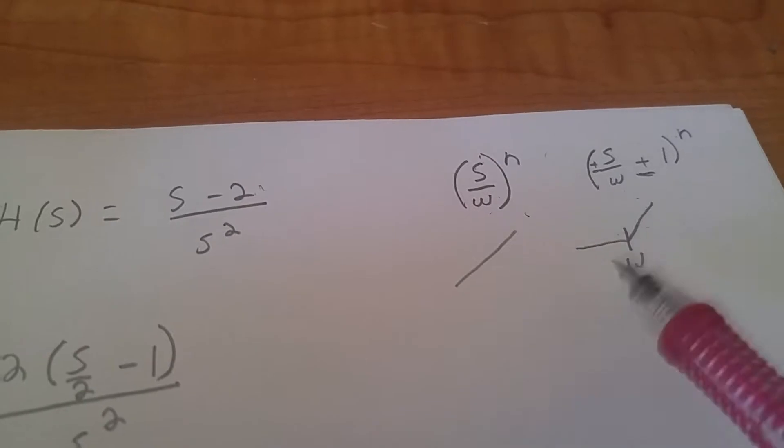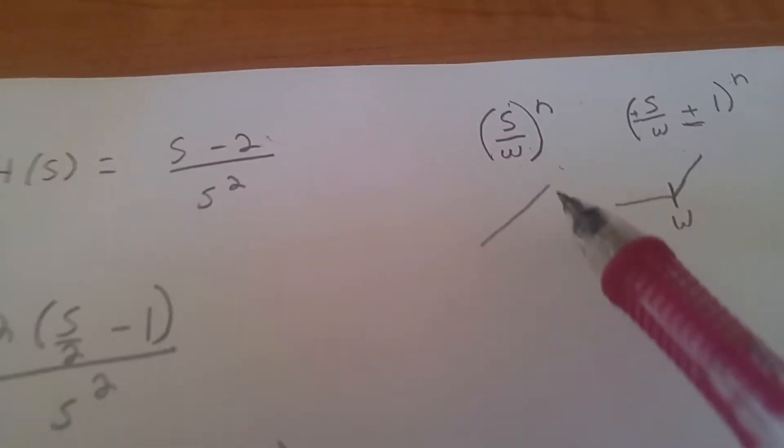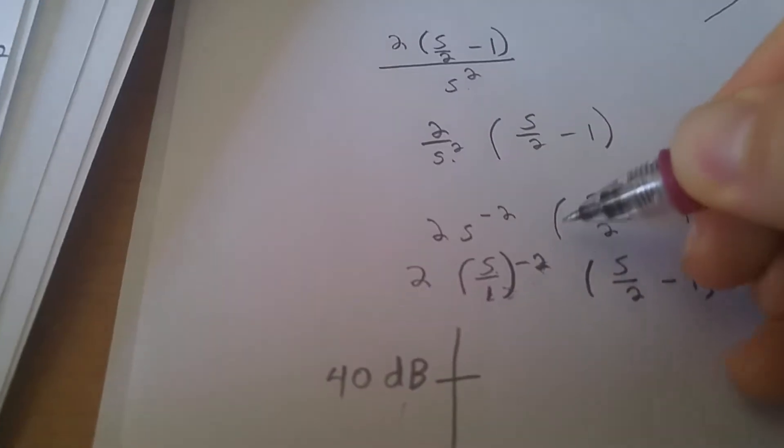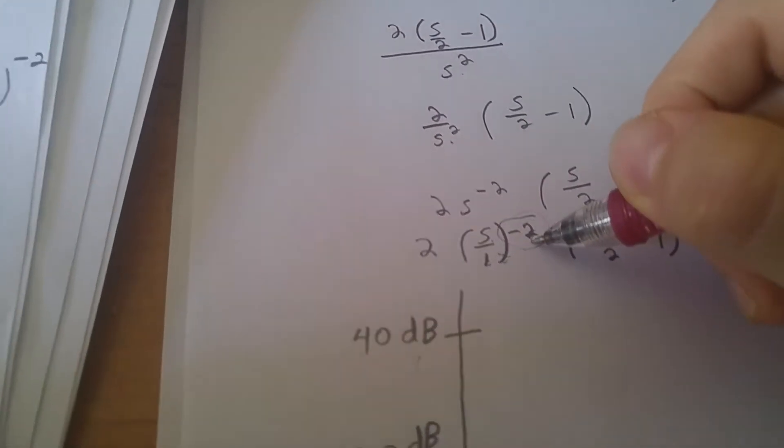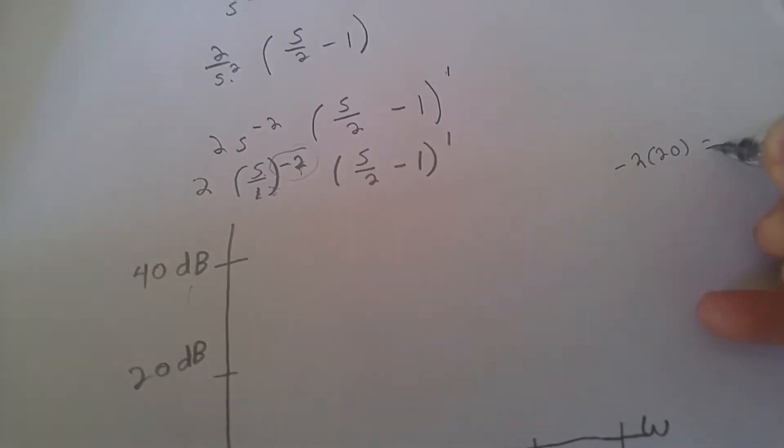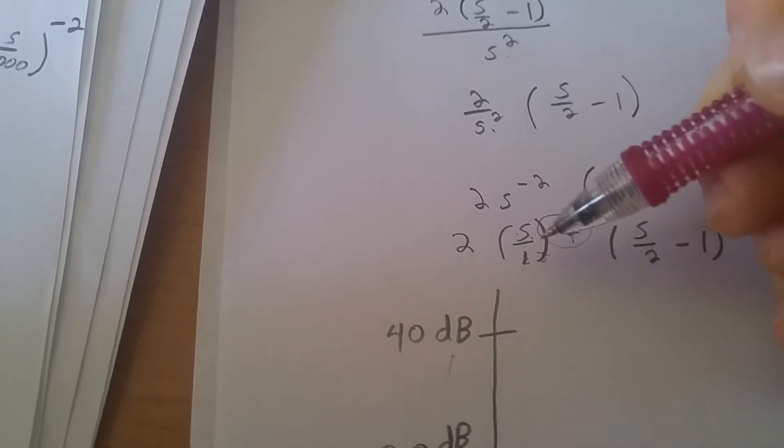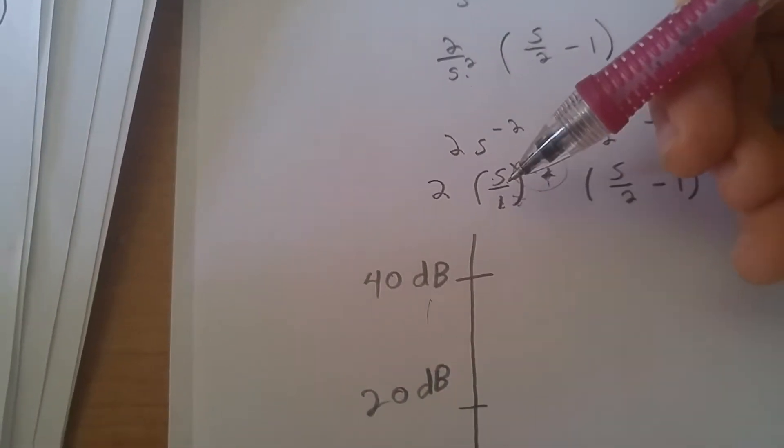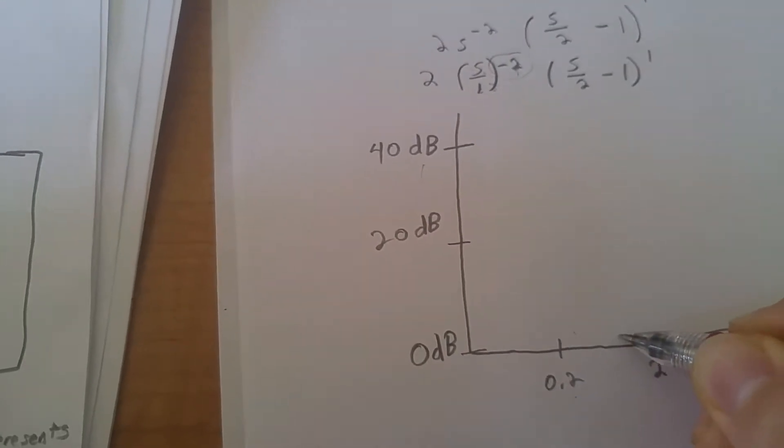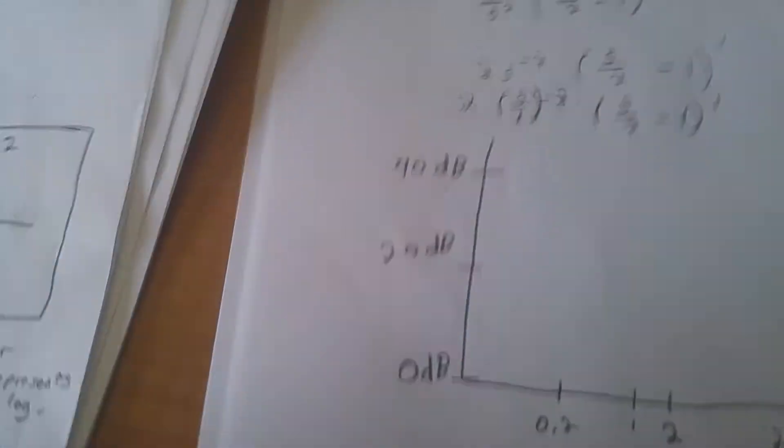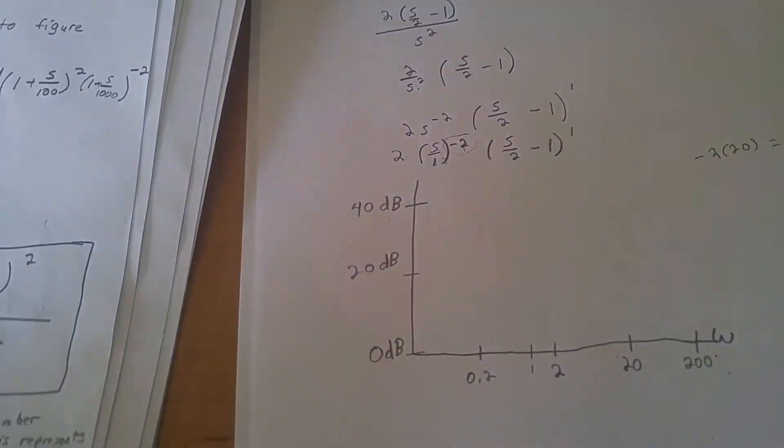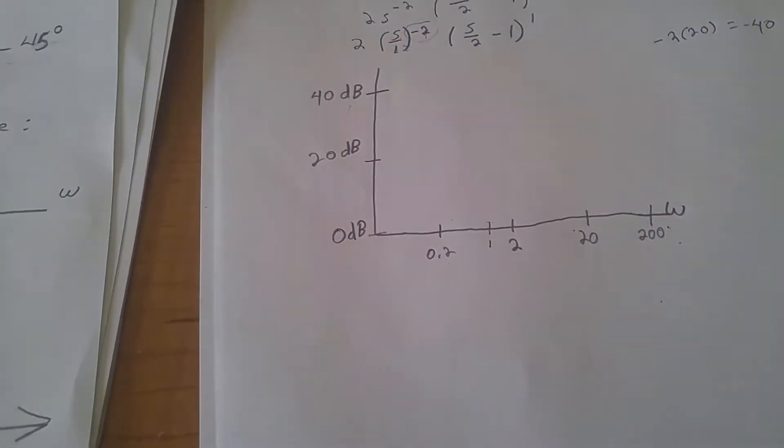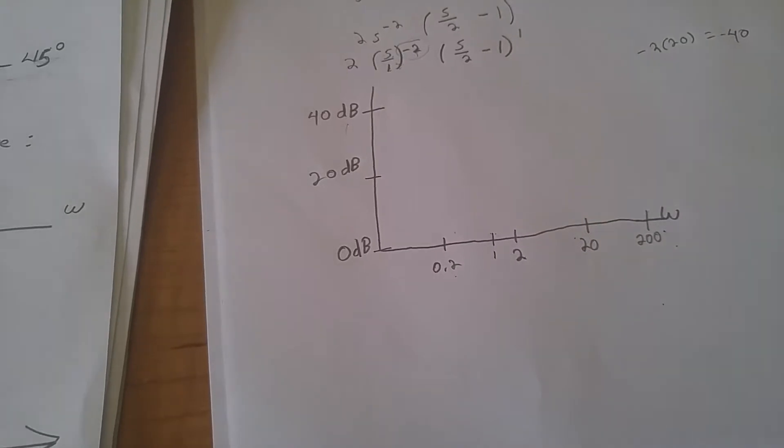But since there's not, it's just going to be a line. How is that line going to look? What's the slope of that line? Well, it's all based on this number right here. This number right here is going to tell us the slope, so that's negative 2, and we have to multiply that by 20 in order to figure out what our slope is. So, negative 2 times 20 is negative 40. That means this line is going to have a slope of negative 40 until it reaches the value of 1. So, I should probably add a 1 in here somewhere. I'll put the 1 right there.